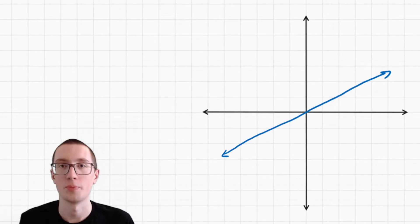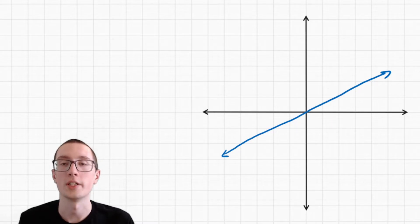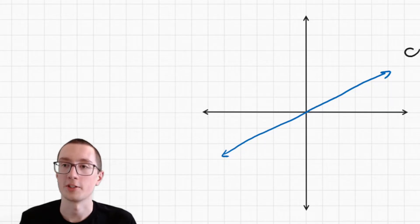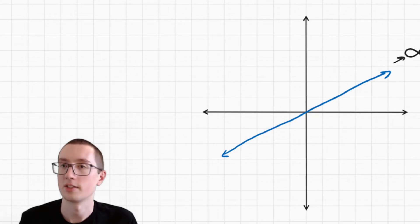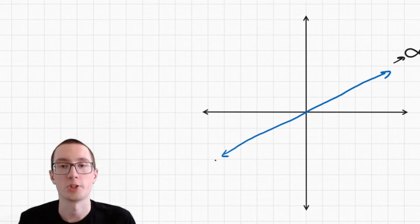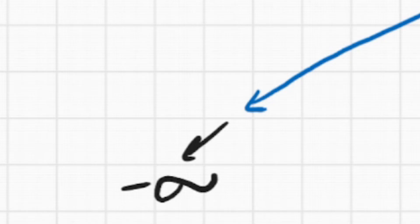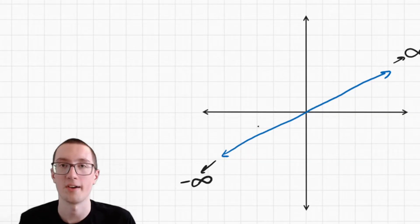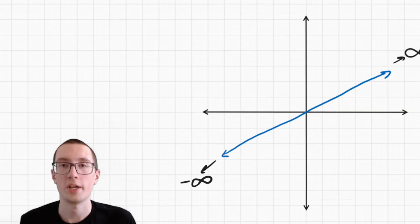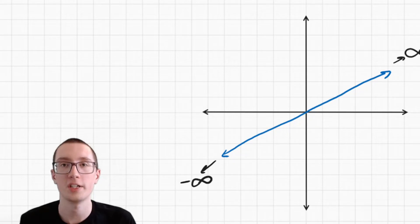Infinity is not a number, but basically when this graph goes on infinitely, we can say that it is approaching infinity — it's going to keep going until it reaches infinity, which is never, but it's going to keep going on. It's also approaching negative infinity in this direction, because the numbers get smaller and smaller as you go to the left, and eventually they will get infinitely small. So the goal of end behavior is to say what is the graph doing as it goes towards infinity and as it goes towards negative infinity.